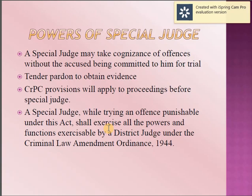There are powers given to the special judges. A special judge may take cognizance of an offense without the accused being committed to him for trial. Tender of pardon may be used to obtain evidence. CrPC provisions will apply to proceedings before special judges. A special judge, while trying an offense published under this act, shall exercise all the powers and functions accessible by a district judge under the Criminal Law Amendment Ordinance 1944.